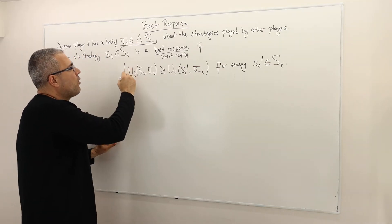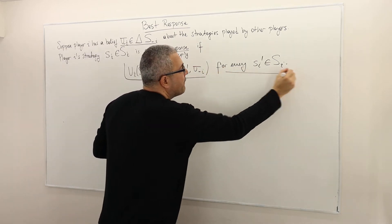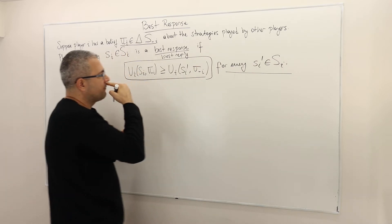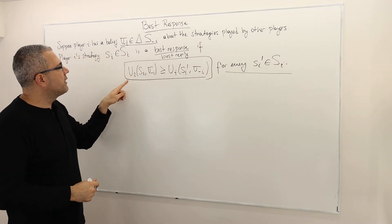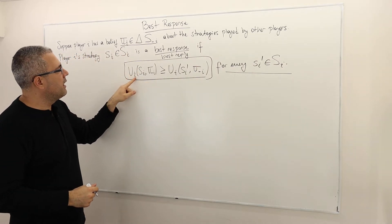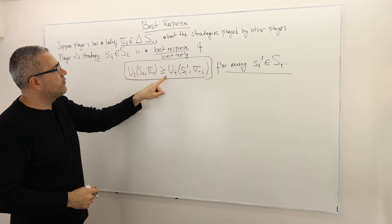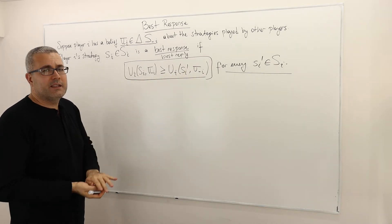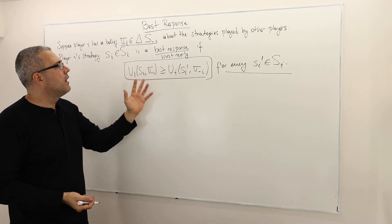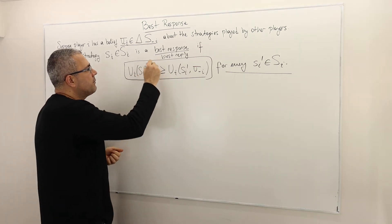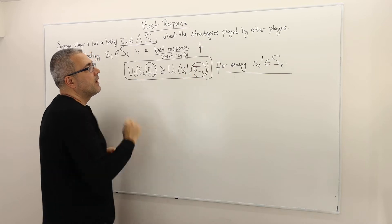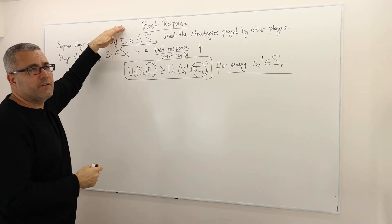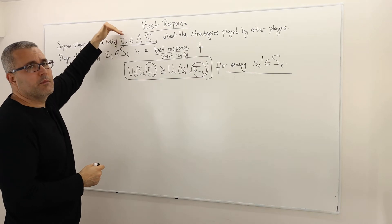If this inequality holds for every si-prime. Be careful — what is this inequality? This inequality says the payoff of player i when he plays si has to be greater than or equal to his payoff if he plays si-prime. So I compare two payoffs. What is fixed? Sigma minus-i is fixed and not varying. This entire definition depends on sigma minus-i.